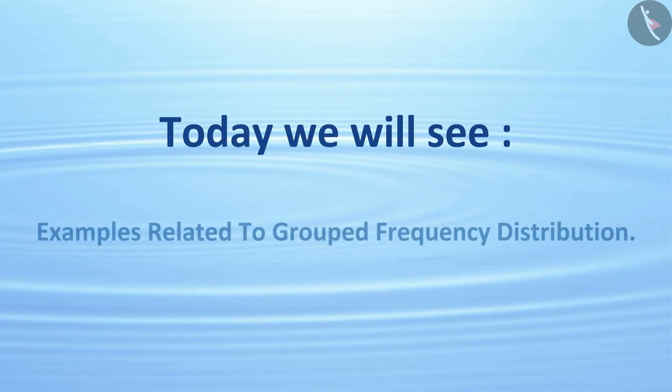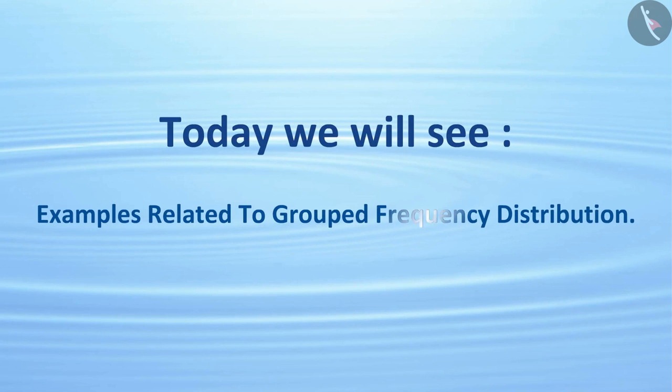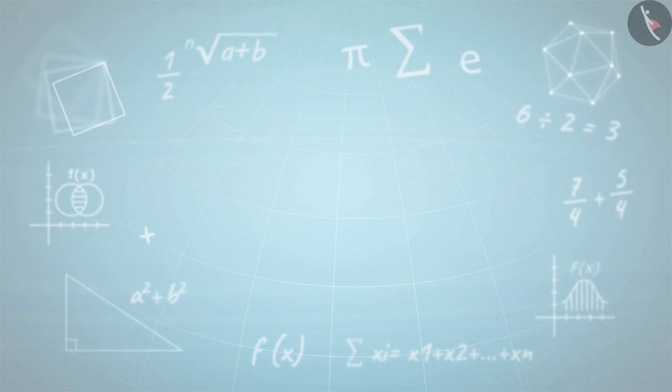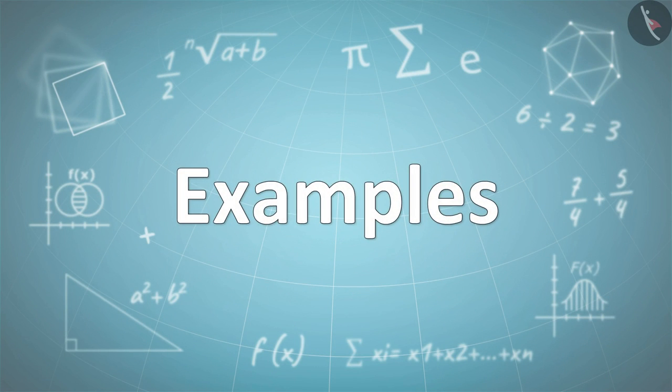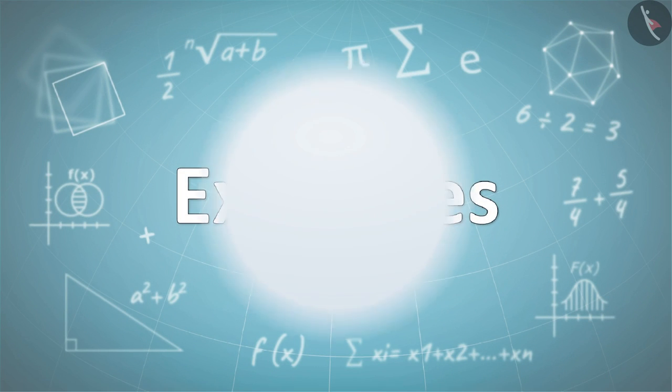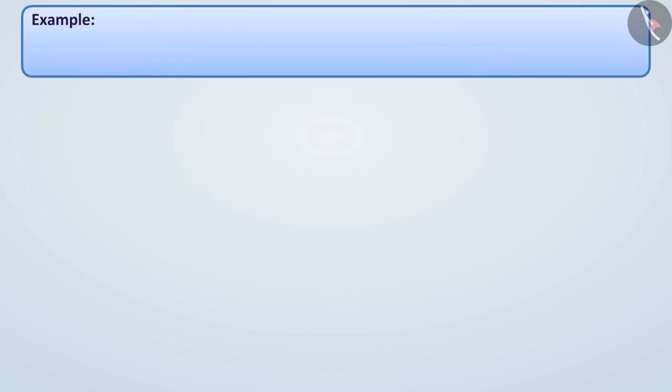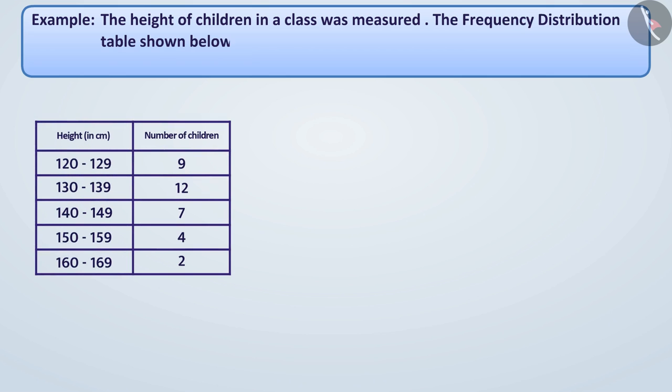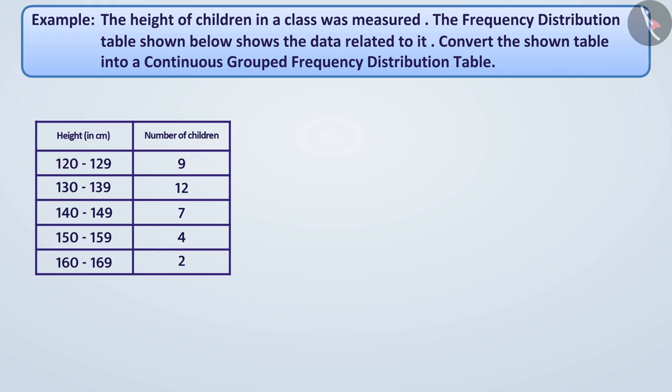Today we will see examples related to Grouped Frequency Distribution. Example: The height of children in a class was measured. The Frequency Distribution table shown below shows the data related to it. Convert the shown table into a continuous grouped Frequency Distribution table.